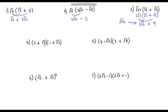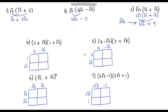Moving on to Question 4: we've got double brackets, so I'll use the grid method. Multiplying 2 by 1 is 2. Then 2 by √3 is 2√3. Then 1 by √3 is √3. And √3 times √3 is 3. Now simplifying: 2 plus 3 is 5, and 2√3 plus 1√3 gives 3√3. So the final answer is 5 plus 3√3.